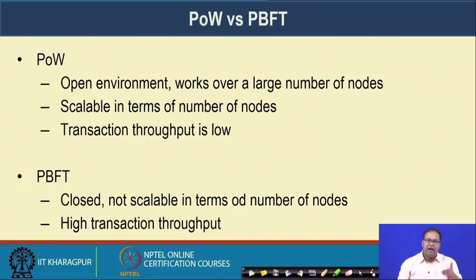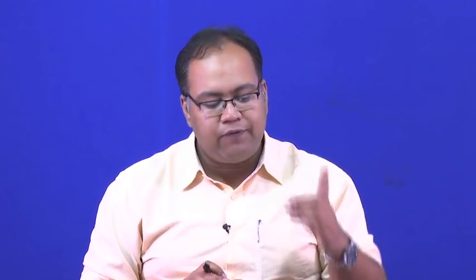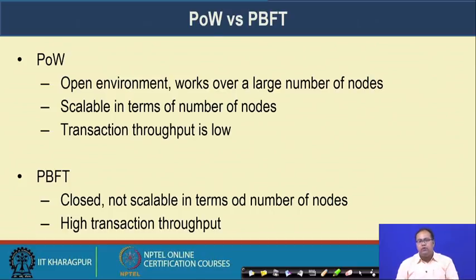If we compare these two classes of algorithms — Proof of Work versus BFT — Proof of Work is designed for an open environment based on challenge-response, where the network throws a challenge and miners collectively try to solve it. Whoever first gives the correct response serializes the block and puts it in the Blockchain. It works over a large number of nodes in an open environment, so Proof of Work is scalable in terms of number of nodes. However, the transaction throughput — the number of transactions supported per second — is very low for Proof of Work.